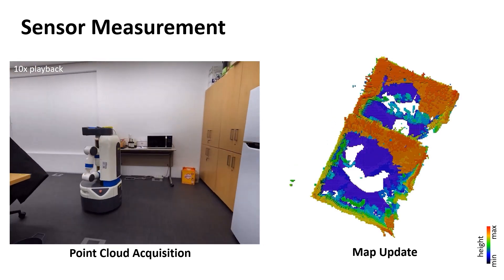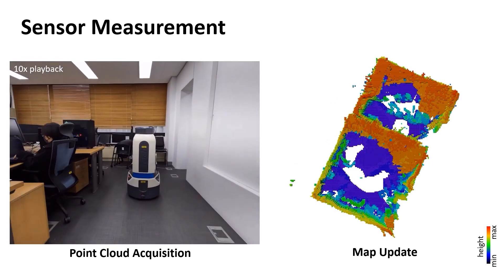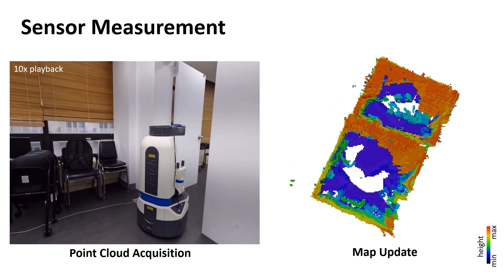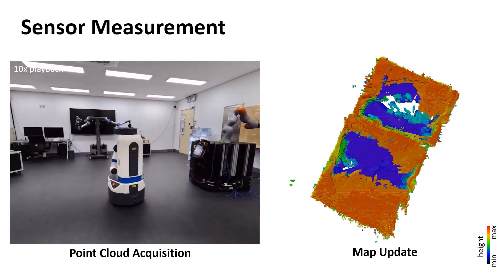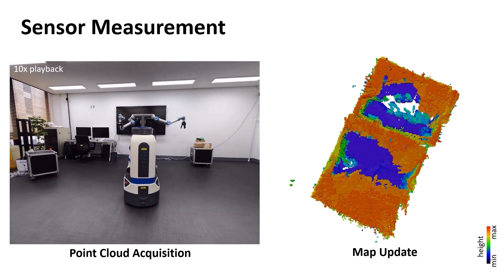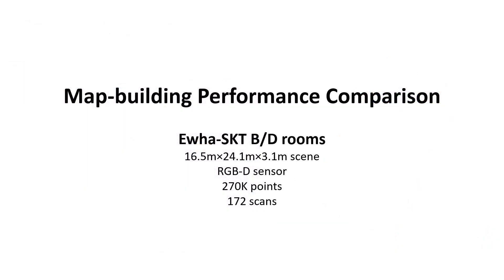On the right, we update an octree map using OctomapRT and PointCloud. The voxel colors indicate their height from the ground using HeightMap. We test the mapping speed of EYSKT building rooms with OctomapRT, Octomap, and SuperRay PVMs.